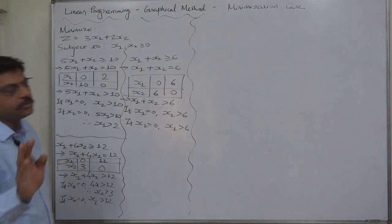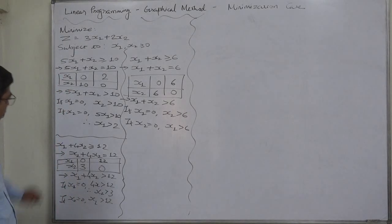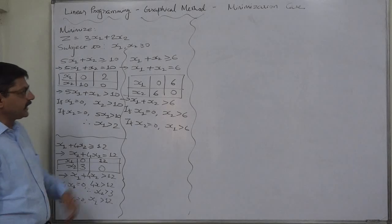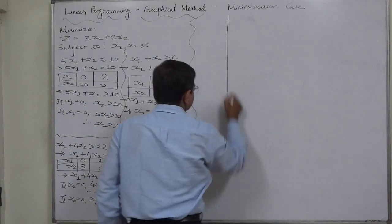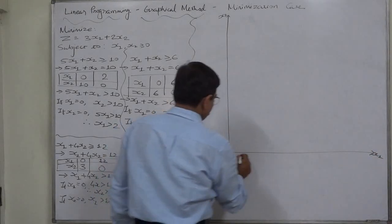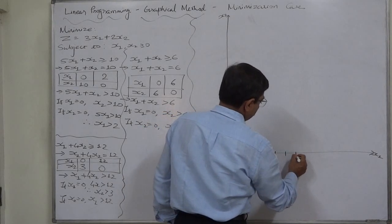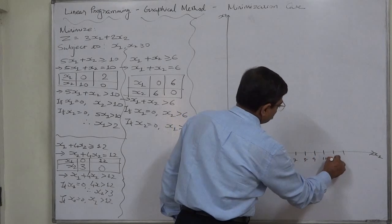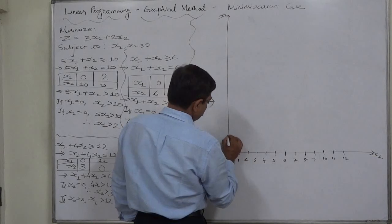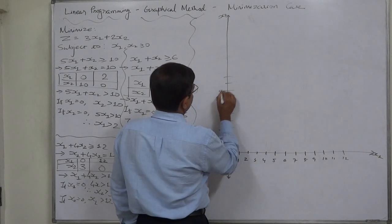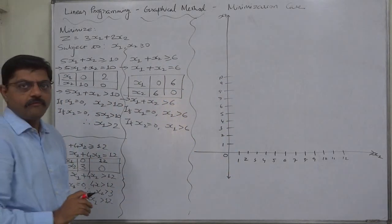Now we can draw the graph. I am going to draw only a sketch — please use graph paper to draw it properly with accuracy. The lowest value on x1 is 2 and highest is 12; for x2 the lowest is 3 and highest is 10. No negative values in either case, so we work in the first quadrant only. You can take a scale of 1 centimeter equals 1 unit on both axes.